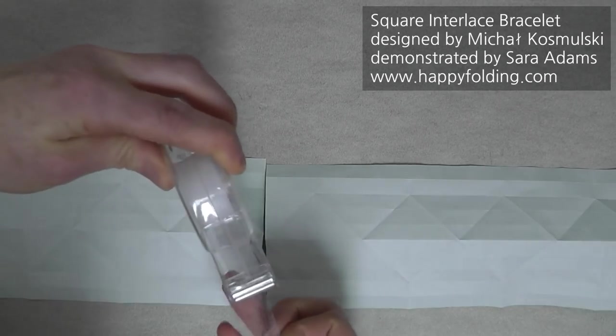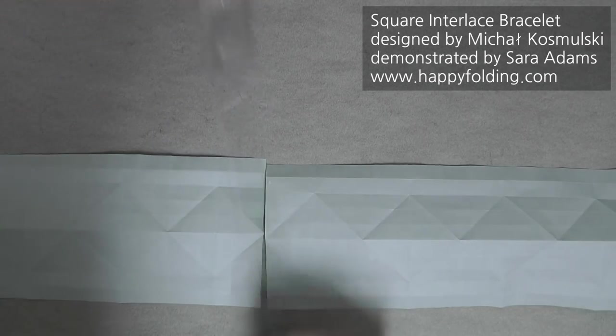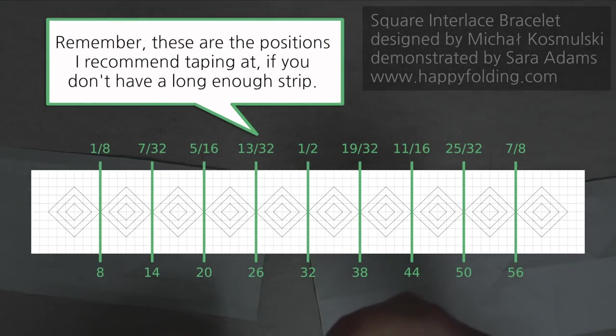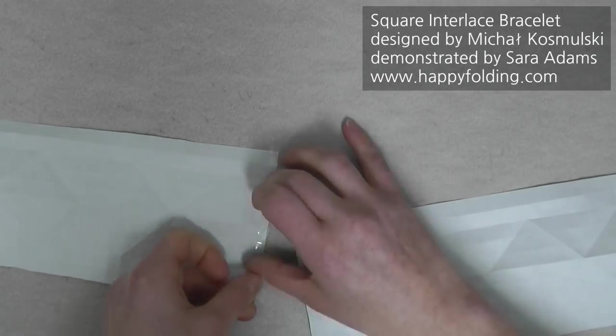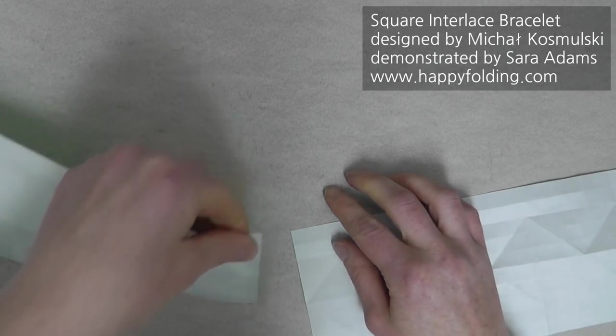So I'm just going to take some tape, and, of course, usually you wouldn't use tape in origami, but this is just to make a longer strip. And then I'm going to tape one side,